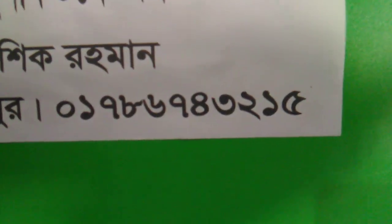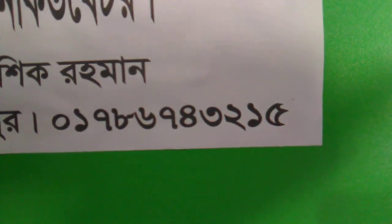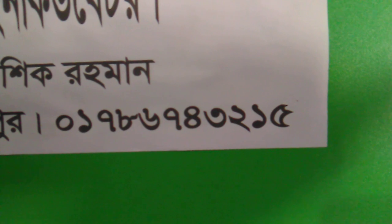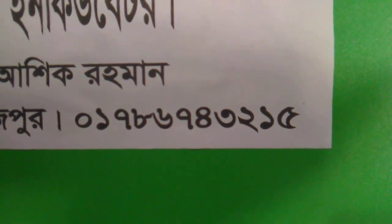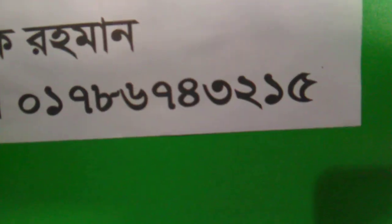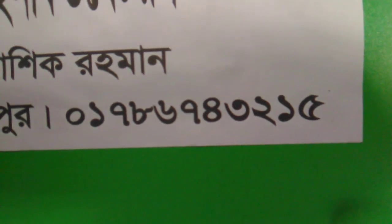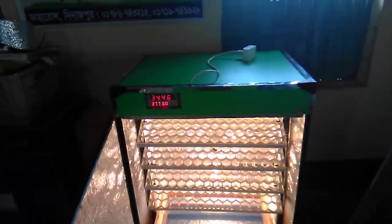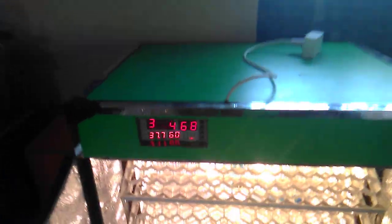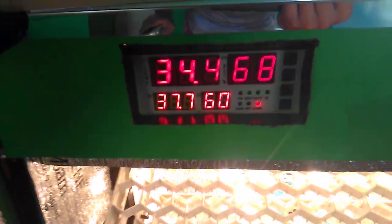In this case, we will call this phone number: seven eight six seven four three two one five. You can contact about the incubator on the email. This incubator has full automatic capacity.